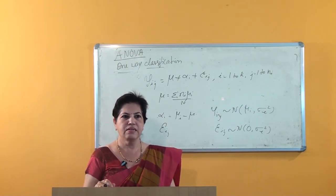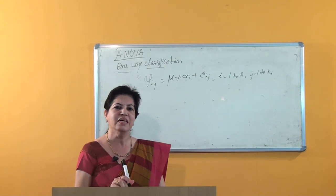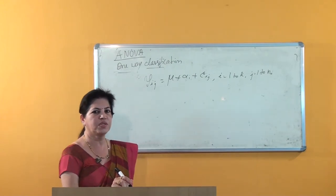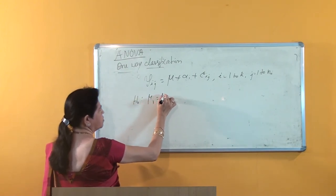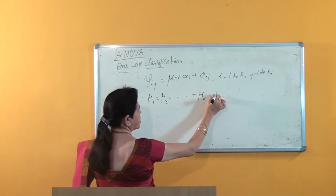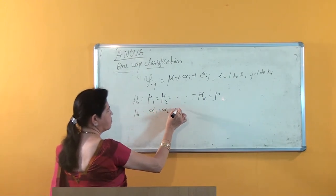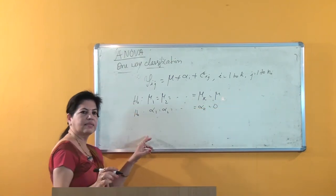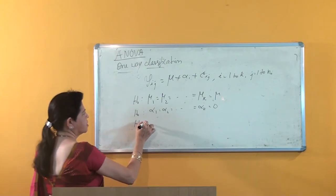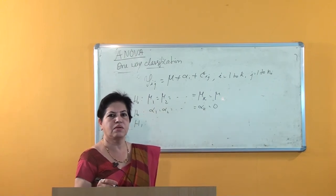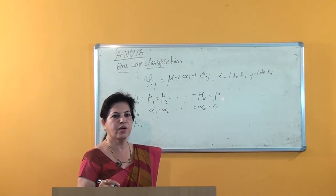Now let us consider the statistical analysis of this model. We have to test the equality of population means, that is the homogeneity of different treatment effects. The null hypothesis H0 is: mu_1 = mu_2 = ... = mu_k, or equivalently in terms of alpha: alpha_1 = alpha_2 = ... = alpha_k = 0, since alpha_i = mu_i - mu. The alternative hypothesis is that at least two of the treatment means mu_1 to mu_k are different.